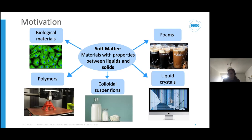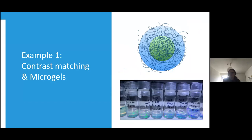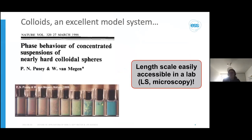The first case study I want to talk about is using microgels and contrast matching. As a bit of background, microgels are an excellent model system. In about 1986, Pusey and van Megen did one of the pivotal studies on these materials. They had hard colloids and found that as they increased the concentration, they could observe with their eyes the phase transitions we expect to see at the atomic scale—from liquid to crystallization to liquid crystals towards precipitation.